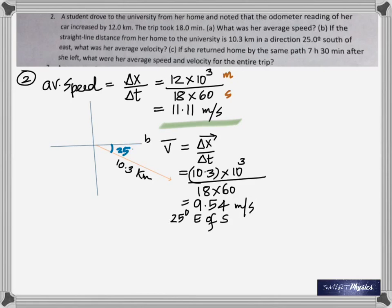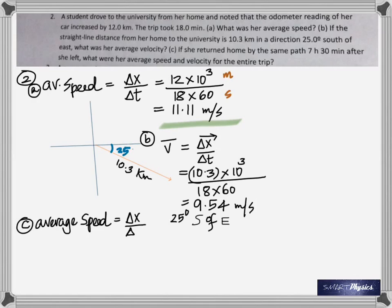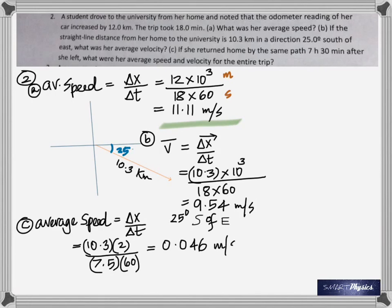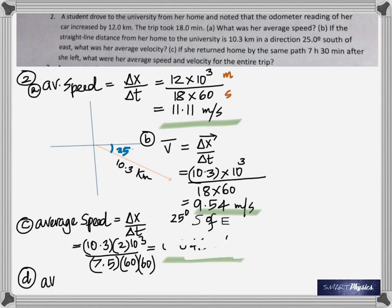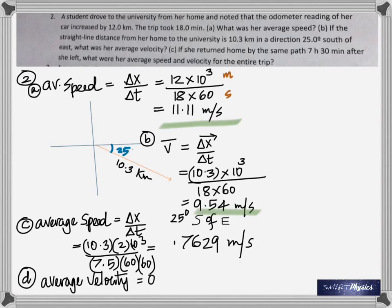Because it's velocity, you have to specify the direction. In part c, if she returned home by the same path 7 hours 30 minutes later, what was her average speed and velocity? To find the average speed you add up the distances — this time it's 10.3 multiplied by 2 because she's coming back. 7 hours 30 minutes is 7.5 hours, so multiply by 60 again to get seconds.